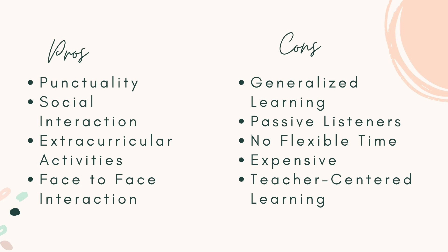Next are the cons or disadvantages of traditional education. First, we have generalized learning. In a formal or traditional education system, the curriculum is often designed to cater to the needs of a large group of students. This can result in a generalized approach to teaching and learning, where individual learning styles, interests, and abilities may not be adequately addressed.